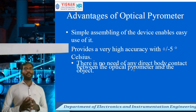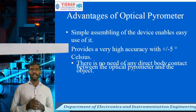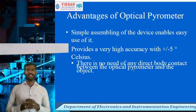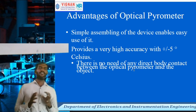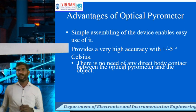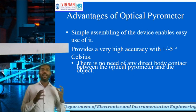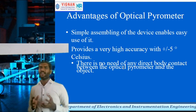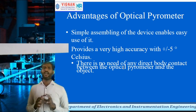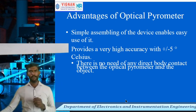Advantages of optical pyrometer: it is a simple assembly, easy to operate, and provides very high accuracy of plus or minus 5 degrees Celsius. There is no need for any direct body contact between the optical pyrometer and the object. This is the special advantage compared to other types of instruments like thermometer, resistance thermometer, thermocouple, and thermistor.